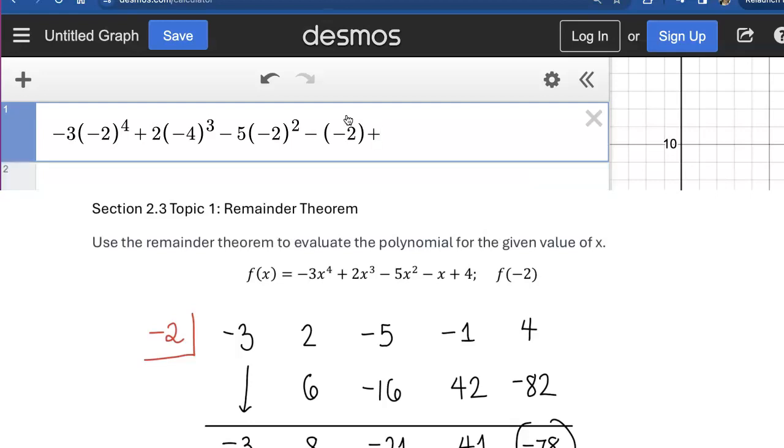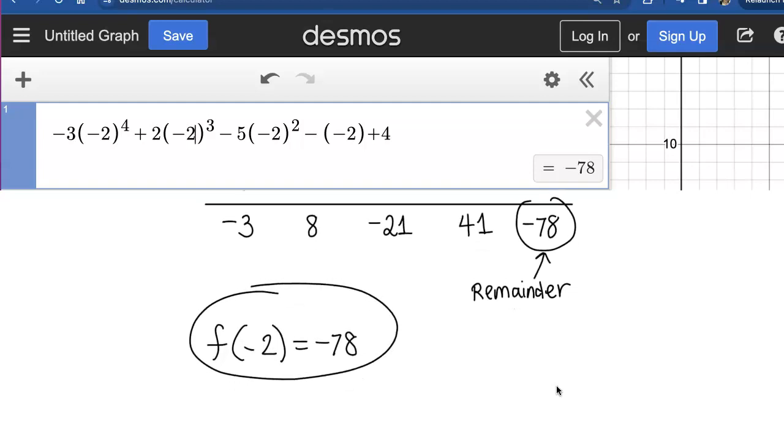That should equal negative 78. Let me double-check. Sometimes I make silly typos. Notice right there, I made a typo. I'm going to fix that to negative 2, and that does come out to be negative 78.